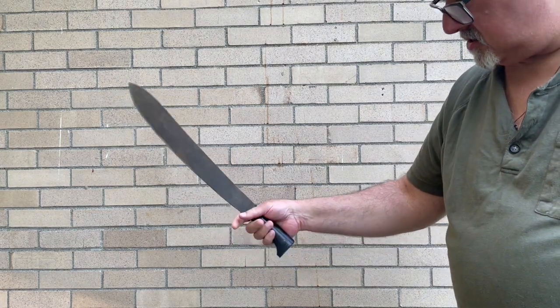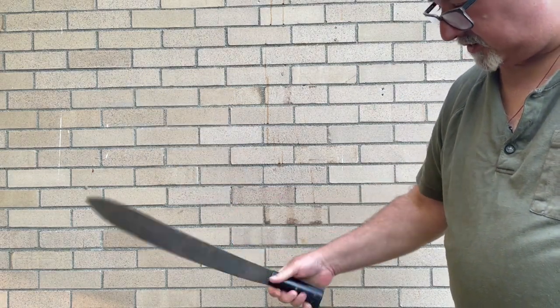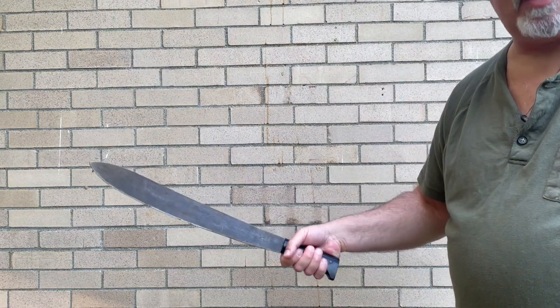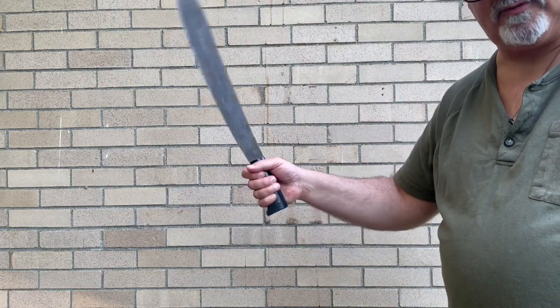So your standard machete comes with a straight handle, and if you're using this in the jungle to chop light vegetation for long periods of time, say you're clearing a trail,